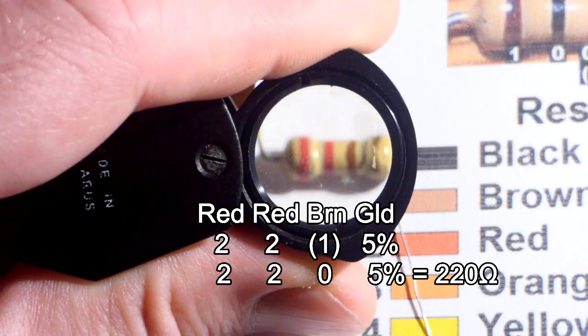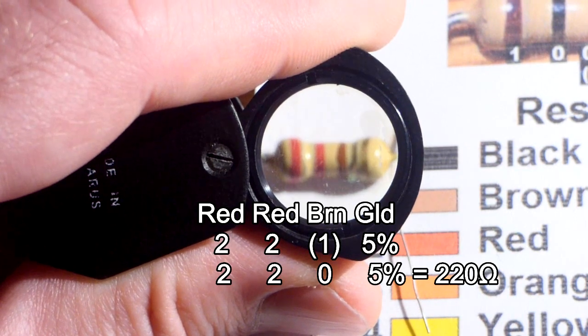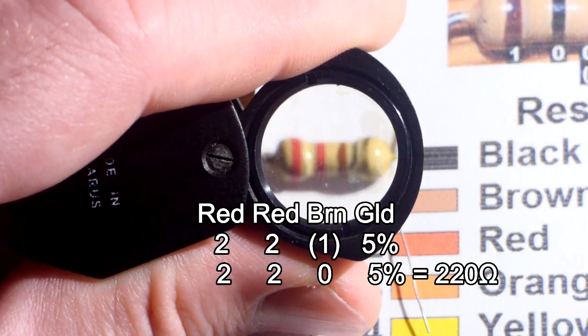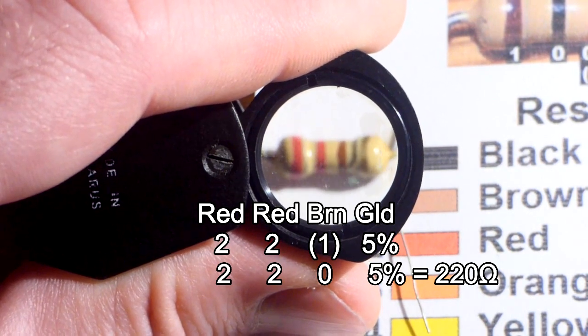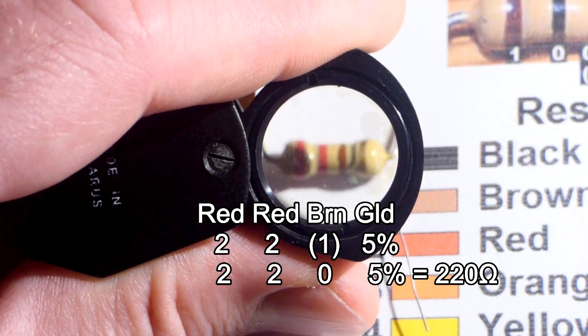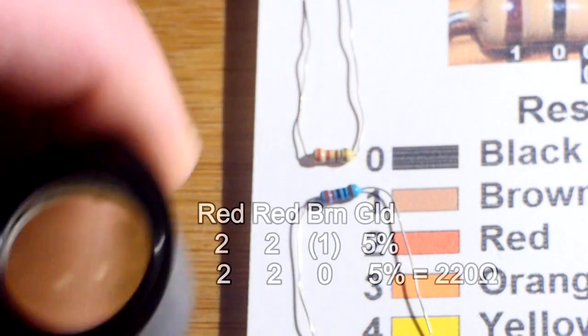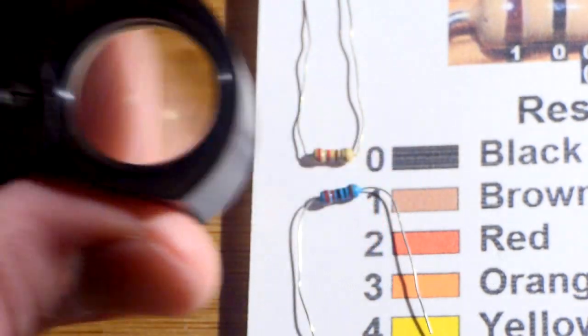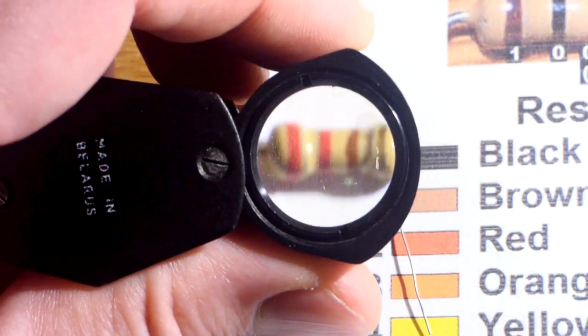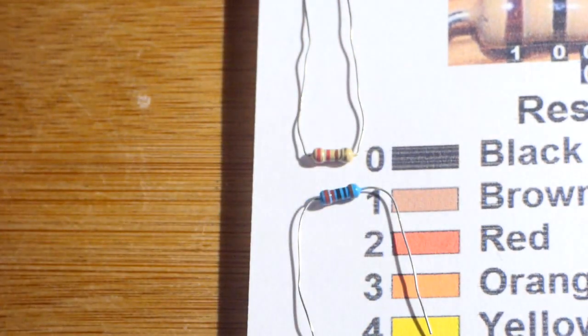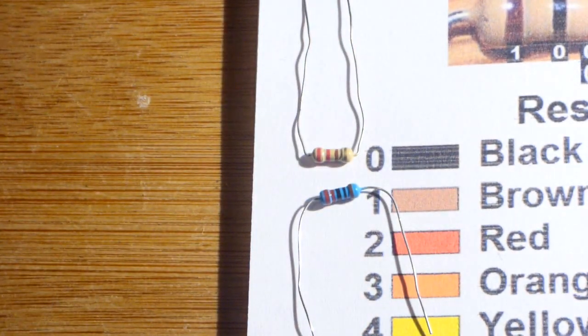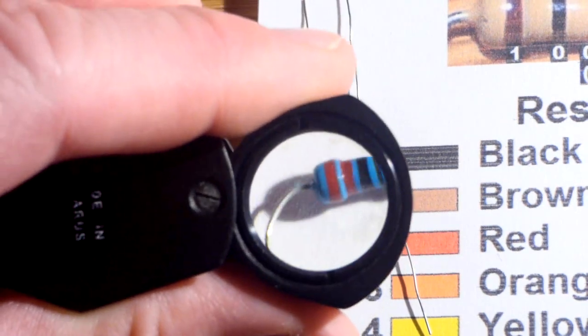But in any case, we saw the 220 ohms there. Now we're going to look at the color code of the two different colored resistors. So, again, the gold stripe goes to the right. That's pretty easy for these beige resistors. And then it's red for 2, red for 2, and then brown for 1. So, that's the multiplier. So, that's 1, 0. Or you can think of it as times 10. And I just find it easier to take that number, and that's the number of zeros you add as a multiplier. So, 220.